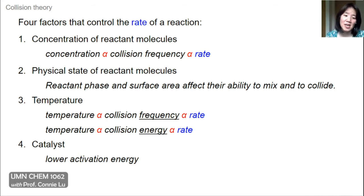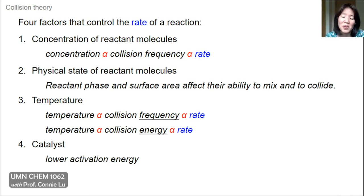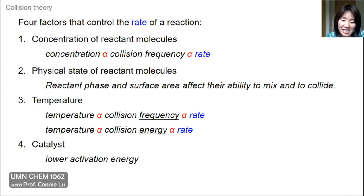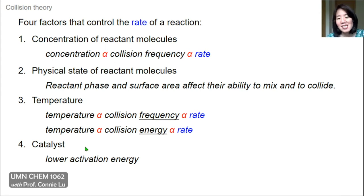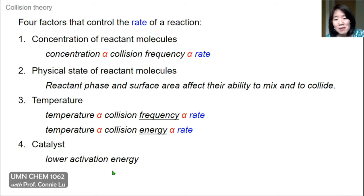Temperature and catalysts are also important. Temperature actually has two roles in collision theory. First, if you raise the temperature you can increase the collision frequency because, in general, molecules move faster at higher temperature, which increases the rate. But increasing temperature also increases the energy of the collision, meaning more collisions meet the activation energy requirement — that also increases the rate. The way a catalyst works is very different: it actually has the ability to lower the intrinsic energy barrier of a reaction, so a catalyst works by lowering the activation energy.